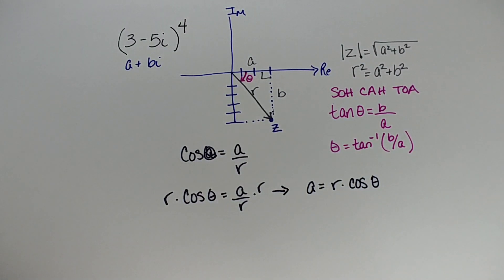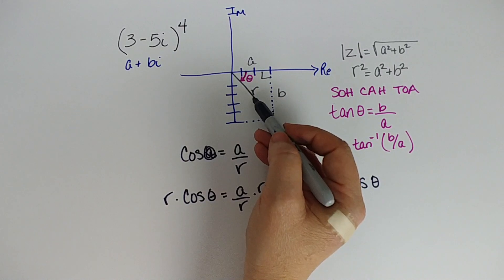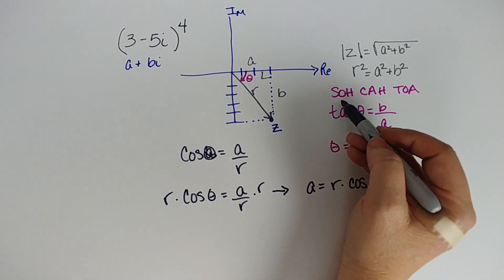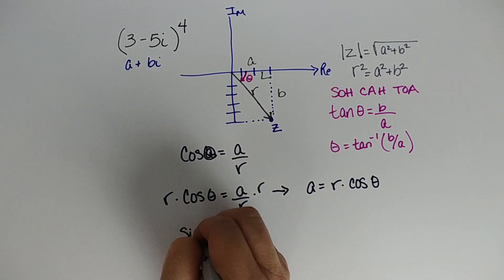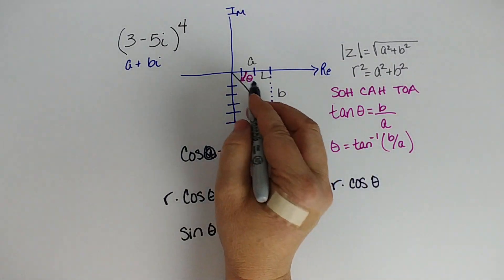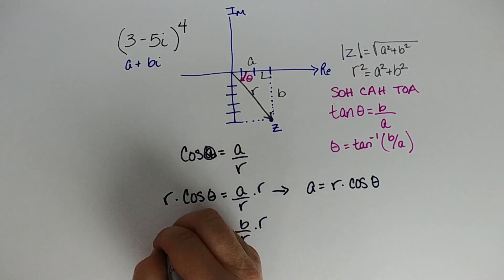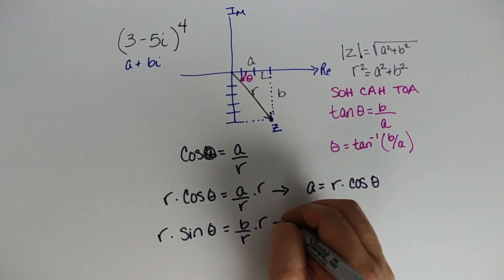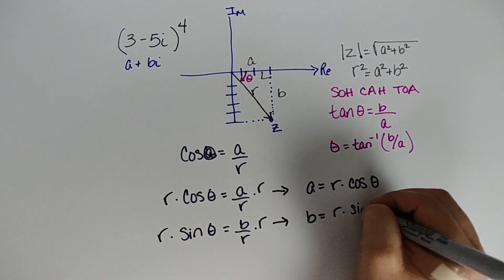You're probably thinking I bet you can do the same thing for sine. And you can, as long as you don't mess up and say the sine of a or the sine of b. So if I'm looking at this angle, b is my opposite over hypotenuse. SOH is opposite over hypotenuse. So I know that the sine of theta is going to be equal to opposite b over r. I'm going to multiply both sides by r. And I'm going to say that b equals r times the sine of theta.